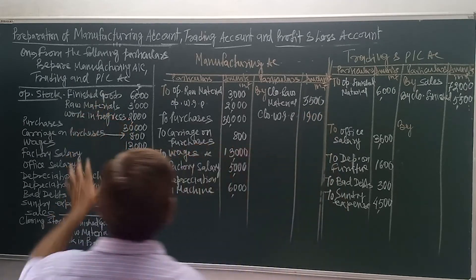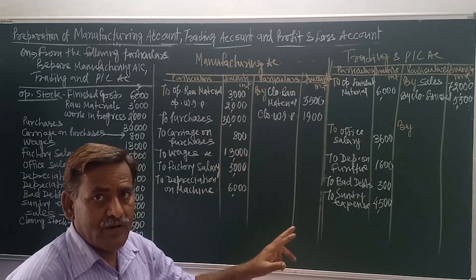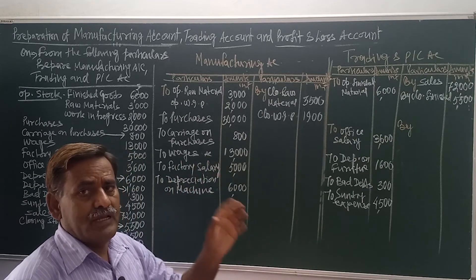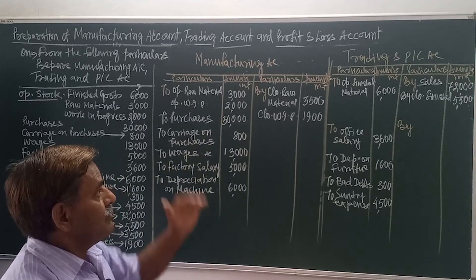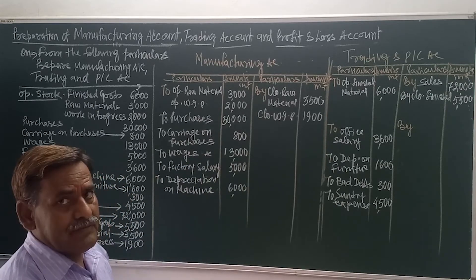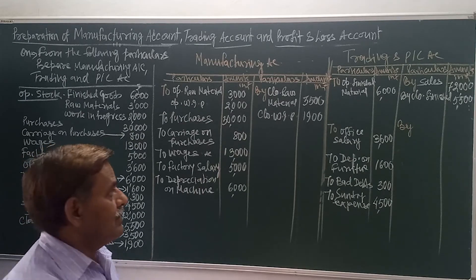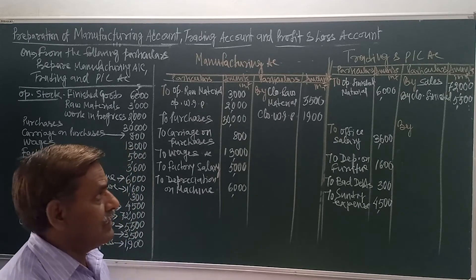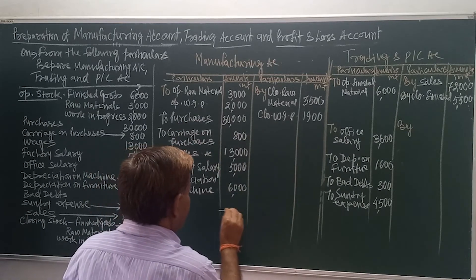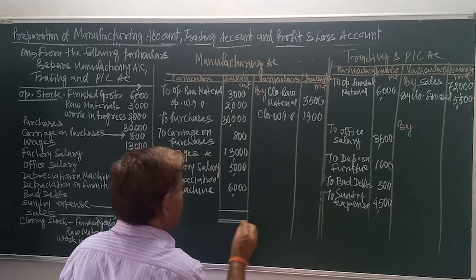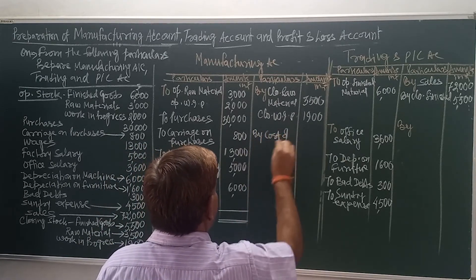So one by one, all items are recorded in manufacturing account, trading account, and profit and loss account — wherever appropriate, wherever the rule prescribes. Now we will find the difference or balancing figure for each account one by one, and from the results we will get cost of production, gross profit, and net profit. As we can see here, the debit value is more — meaning expense is being incurred in production — and this expense is called cost of production. Whatever difference comes on the credit side will be known as cost of production.